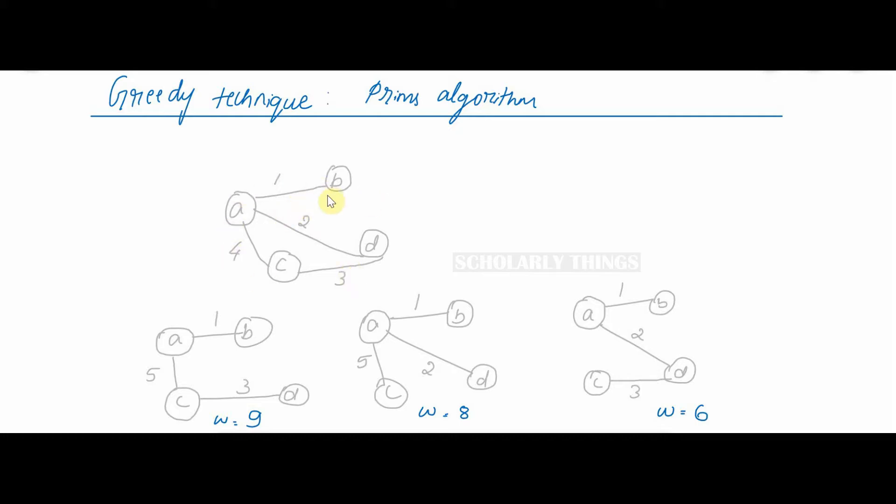Now consider this graph. It has these three spanning trees. Weight of first tree is 9, weight of second tree is 8, weight of third tree is 6.